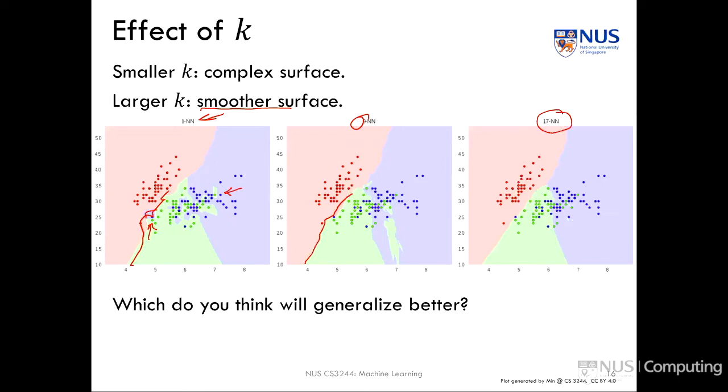We're going to get smoother and smoother surfaces. You can see with the exception of a little patch of outliers, basically it's devolved into three specific patches, which are our three classes. If we move to even higher number of nearest neighbors, it's going to regress to just calling everything the majority class. Our question to you is to think about which of these surfaces, going from smaller k to larger k, is going to work better to generalize to a new data set.